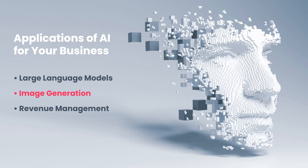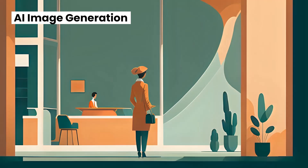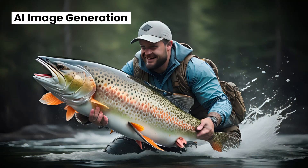Let's move on to the next application of AI for your business, and that's AI image generation. AI image generators work similar to large language models in that they train using a large set of data, but in this case it's images rather than text. Similar to ChatGPT, it can be tricky to get the generator to make exactly what you're looking for. However, it is capable of delivering impressive results with very little effort. In fact, 90% of the images that you see during this presentation were created using Imagine Art AI.